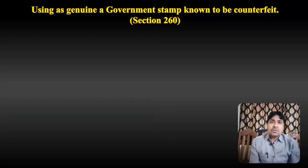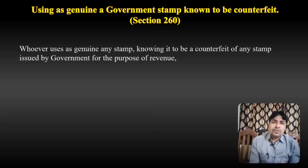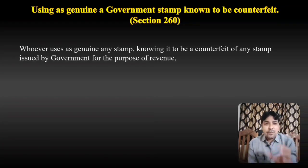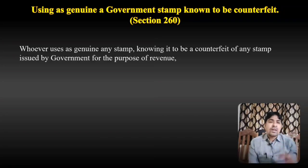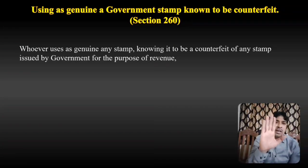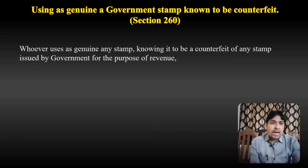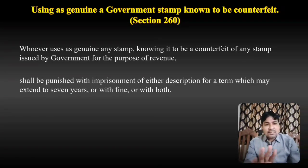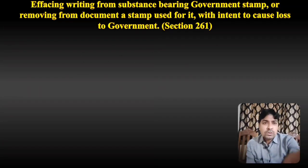Section 260 — Using as genuine a government stamp known to be counterfeit. Whoever uses as genuine any stamp knowing it to be a counterfeit of any stamp issued by government for the purpose of revenue — if a person uses such a fake stamp claiming it is genuine, knowing it is fake — shall be punished under Section 260 with imprisonment which may extend to 7 years, or with fine, or with both.